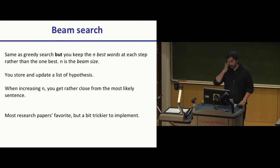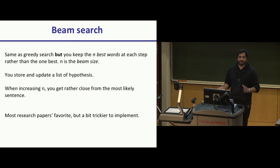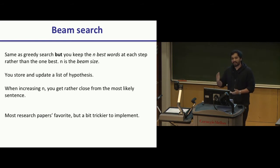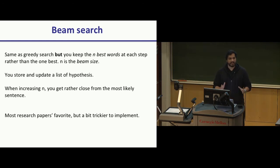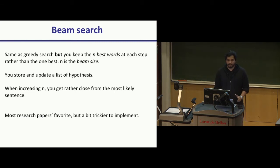Beam search is similar to greedy but you're essentially parallelizing your search. At any given time step, you branch out into n different hypotheses — picking the n most likely words. At every time step you end up branching into multiple potential sentences, and then prune down sentences with the lowest probability. It's pretty difficult to implement but performs the best. If you're reading any papers on language models, they generally tend to use beam search. You'll probably be coming back to these slides for homework four.